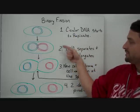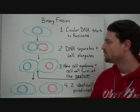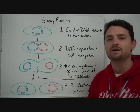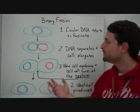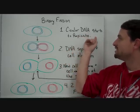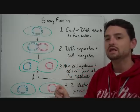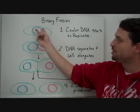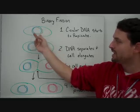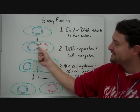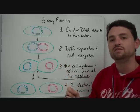It's a simple four steps identified here — your book may give a couple more, but it's the same basic process. So the circular DNA starts to replicate. There will be one single point on the DNA where it starts to replicate, and it will actually replicate in both directions towards an end point, staying attached at that end point for a little while during cell division.